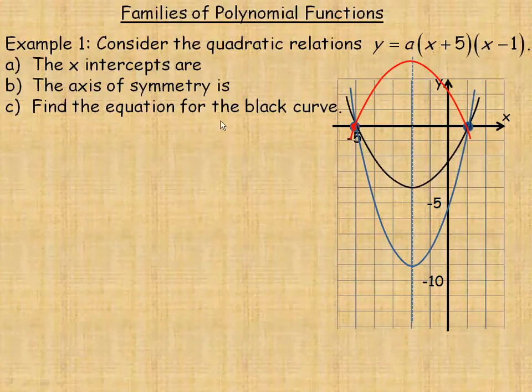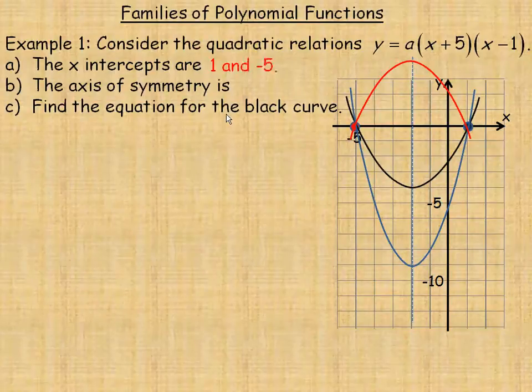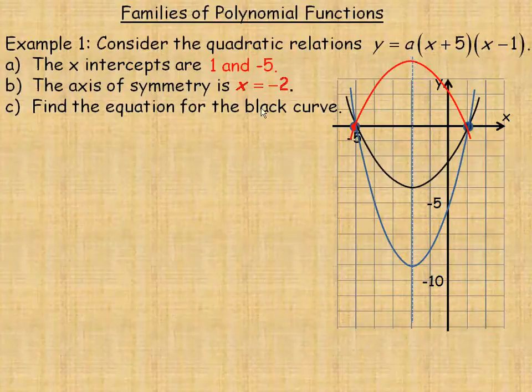The x-intercepts are at 1 and negative 5. The axis of symmetry is the same as this vertical line here, which goes through the x-axis at negative 2, so the axis of symmetry is x equals negative 2.